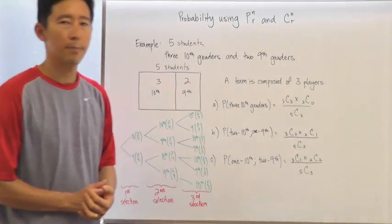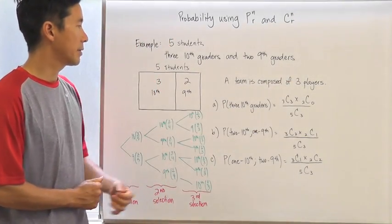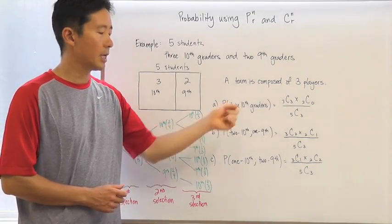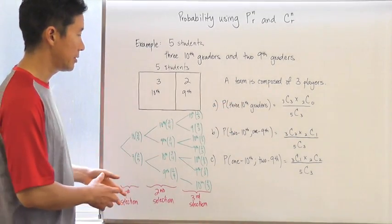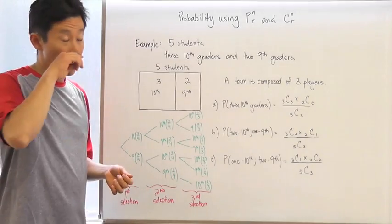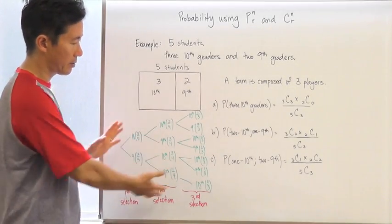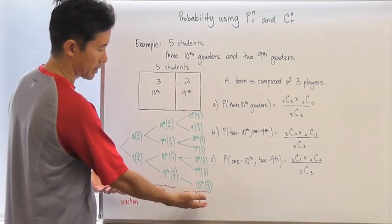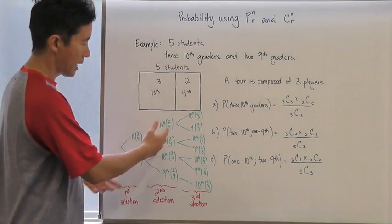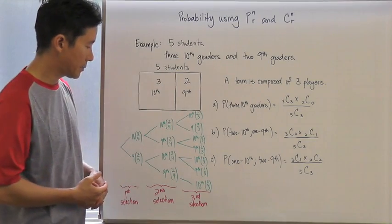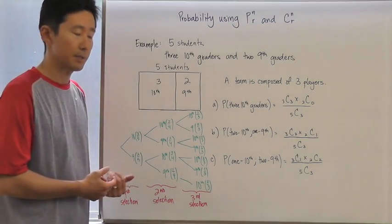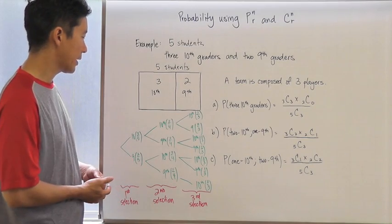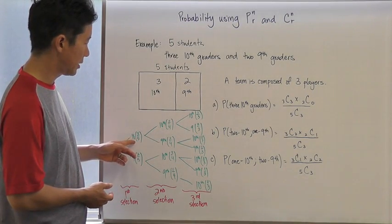Let's say a team is composed of three players. If we wanted to calculate the probability that the team is composed of three tenth graders, one approach using non-combinatoric methods is to create a tree diagram. We have our first selection, second selection, and third selection with associated probabilities based on previous selections.